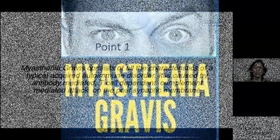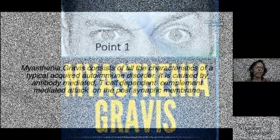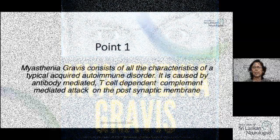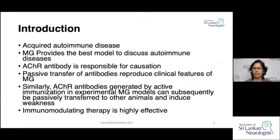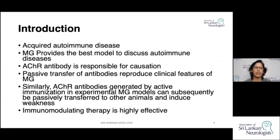Myasthenia gravis is an autoimmune disorder caused by antibody-mediated, T-cell dependent, complement-mediated attack on the post-synaptic membrane. We call it a typical autoimmune disorder because the antibody responsible for causing myasthenia has been recognized — it is the acetylcholine receptor antibody.